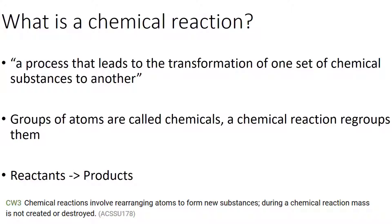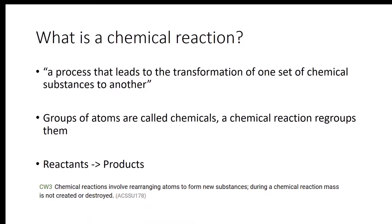Something I learned is that groups of atoms are called chemicals, and a chemical reaction regroups them. The simple equation for that is: reactants go to products. That's a generalised word equation for a chemical reaction. And if you go to the syllabus it says chemical reactions involve rearranging atoms to form new substances. Importantly, you should remember that during a chemical reaction, mass is not created or destroyed.